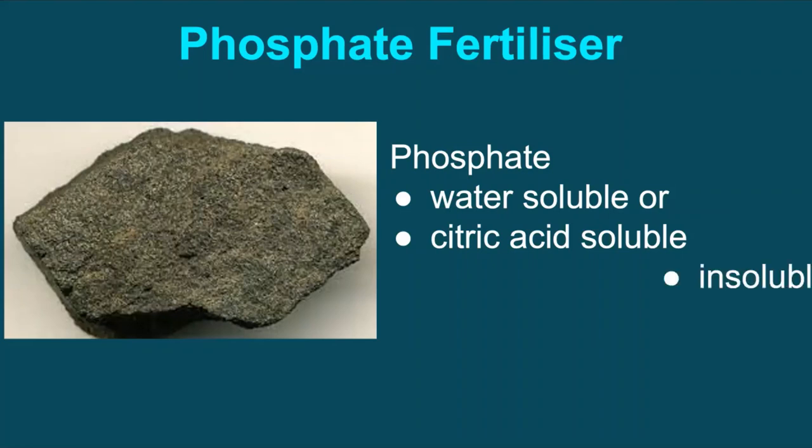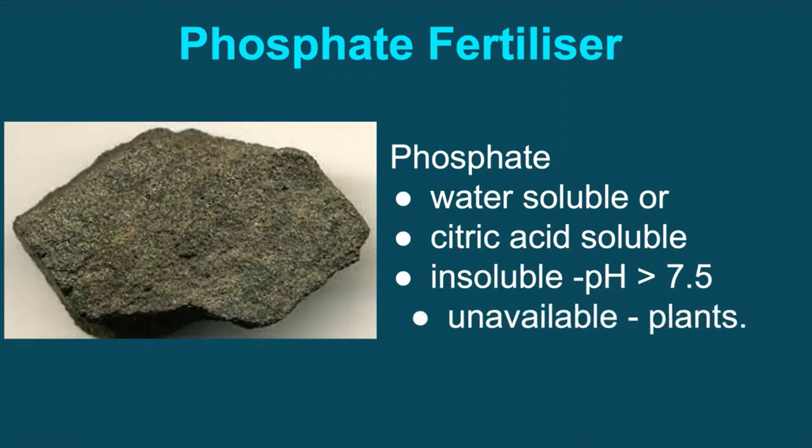However, due to poor solubility at higher pH above 7.5, a large portion of phosphate which is applied in the soil remains unavailable to the plant.